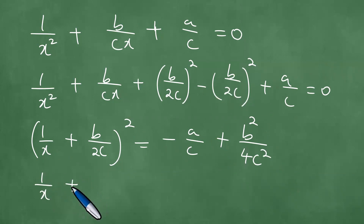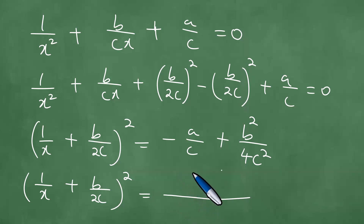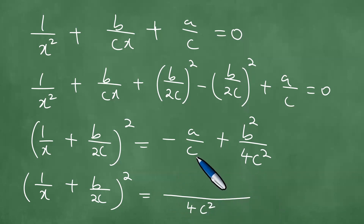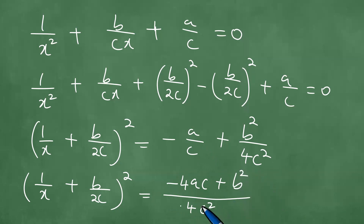This is exactly 1 over x plus b over 2c, squared. On the right-hand side, taking 4c squared as a common denominator: 4c squared divided by c gives 4ac, giving us minus 4ac, and 4c squared divided by 4c squared gives 1, times b squared.